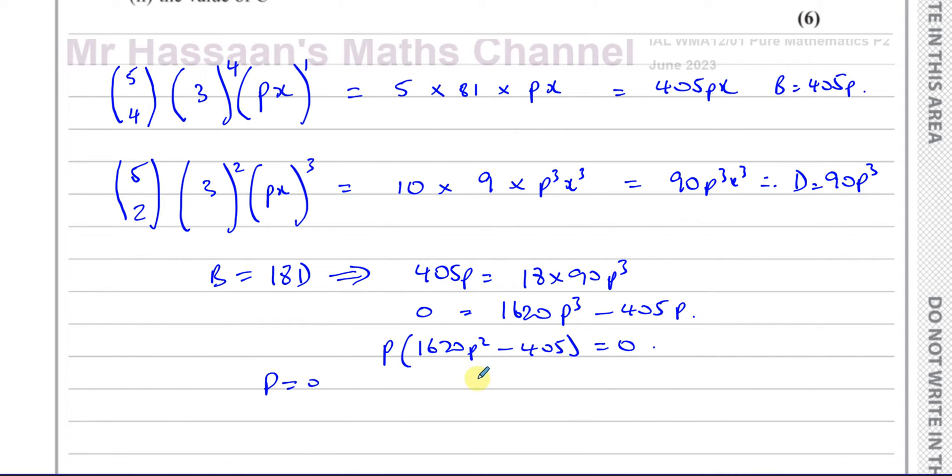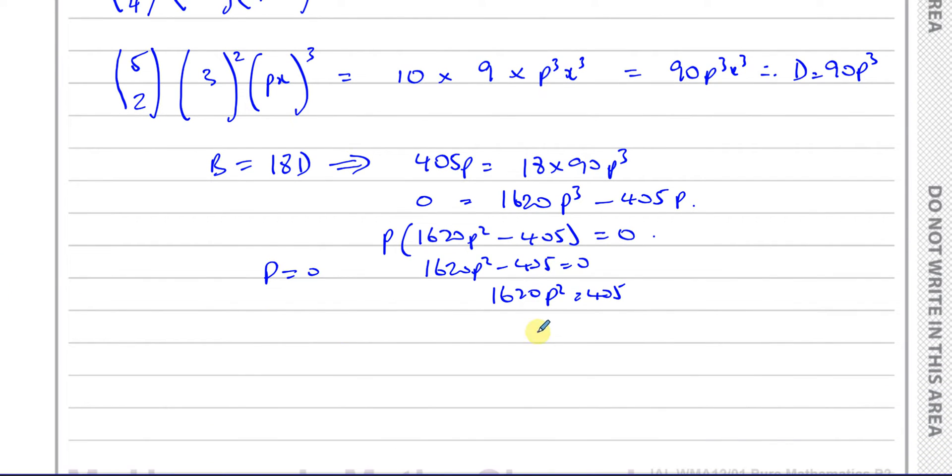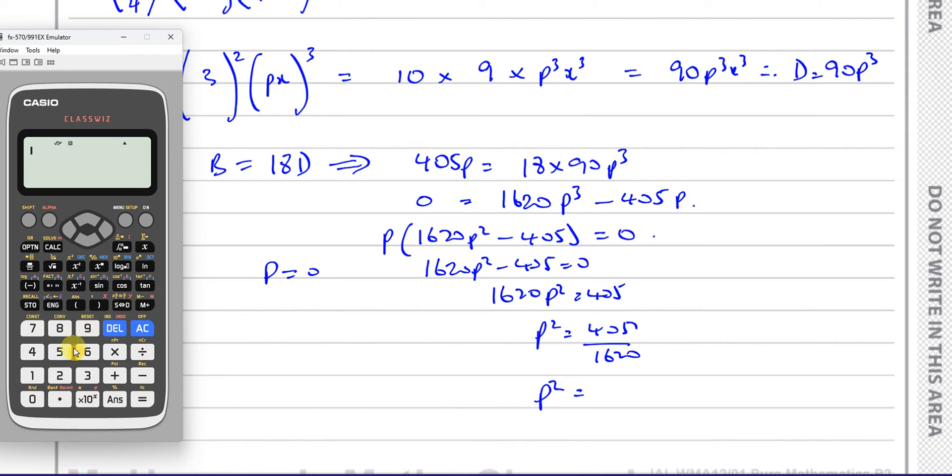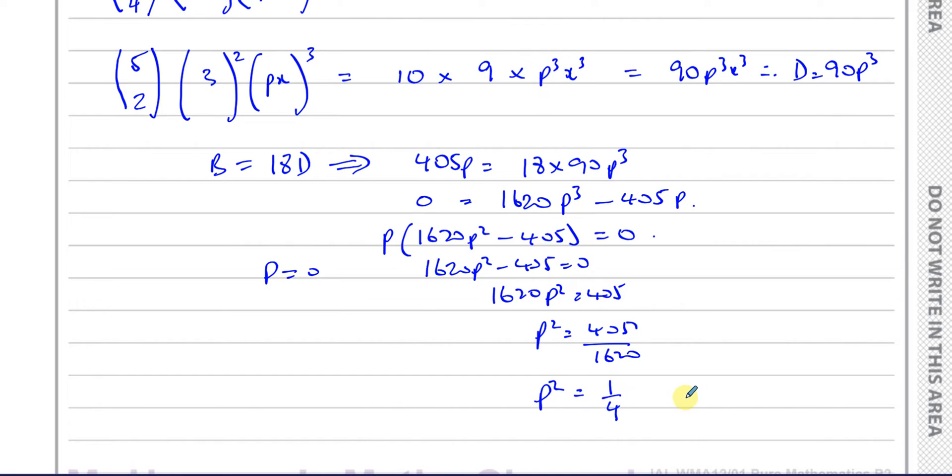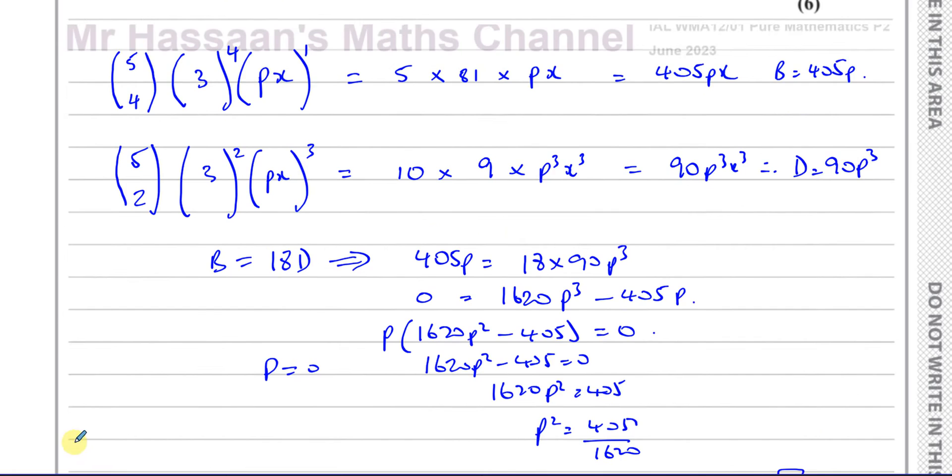So either p equals 0 or 1620p squared minus 405 equals 0. So in this case, 1620p squared equals 405. So p squared is going to be 405 over 1620, which gives us a quarter. So therefore we can say p is equal to plus or minus the square root of a quarter, which is plus or minus a half.